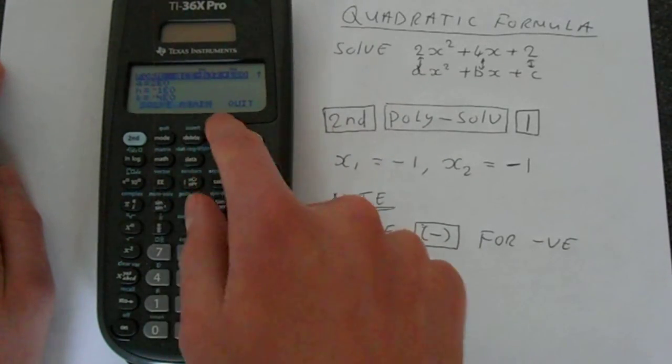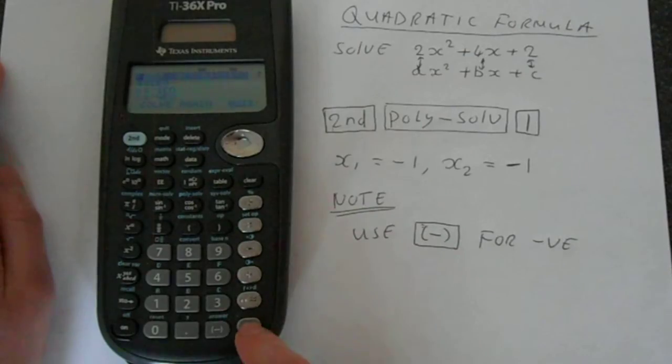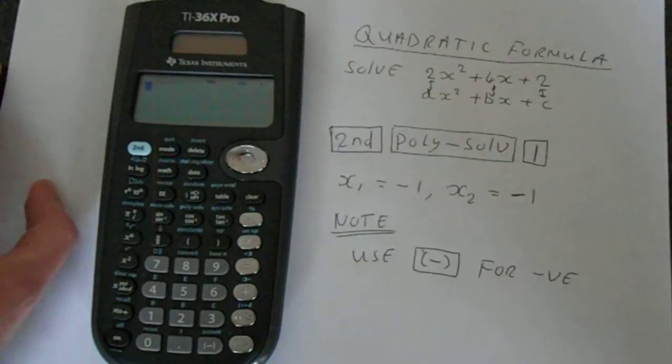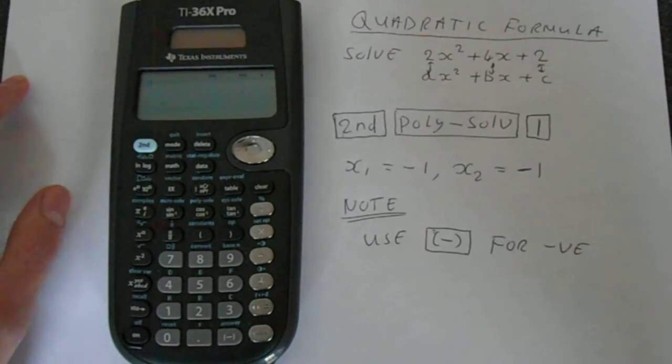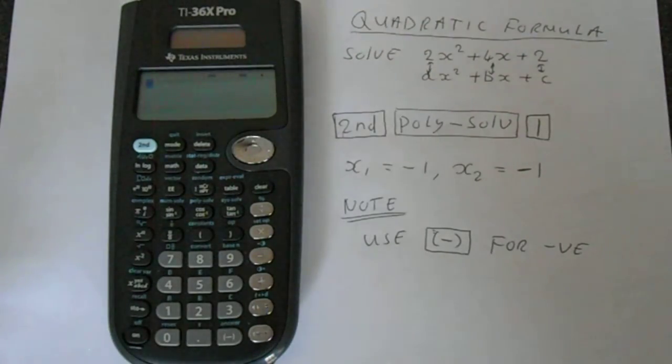If you want to get out of this just keep pressing enter and then you'll get quit. Press quit and it gets you out of that. So that's the quadratic formula on your TI-36X Pro. Hopefully this video helped you and finally thank you for watching.